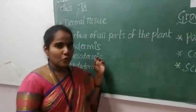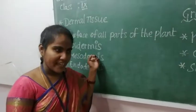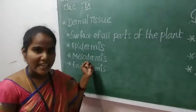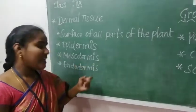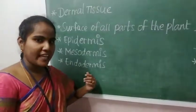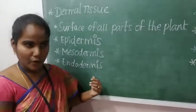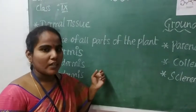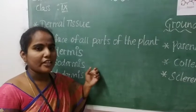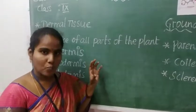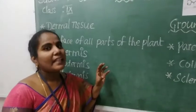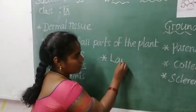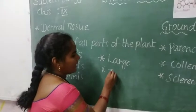The tissue present in the outermost layer is called the epidermis. If it is present in the middle layer, it is called the mesodermis. If it is present in the innermost layer, it is called the endodermis. In meristematic tissue, cells are very small and the cell wall is very thin, whereas in dermal tissue the cells are very large and the cell wall is very thick.